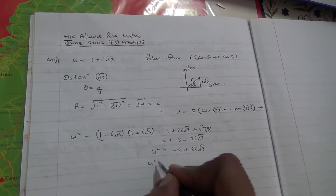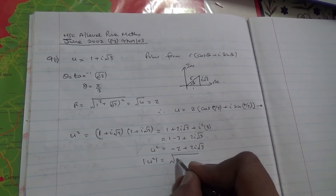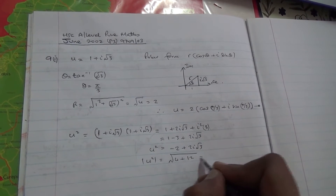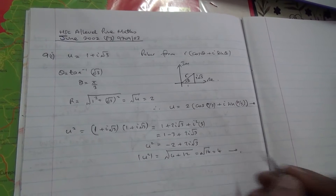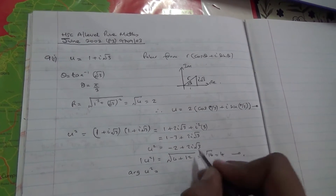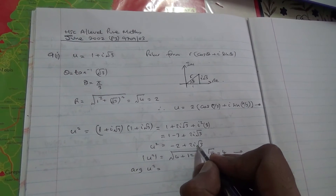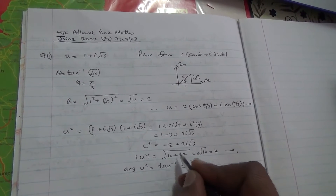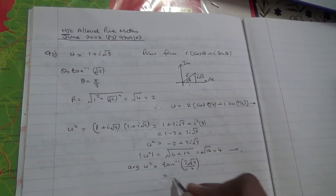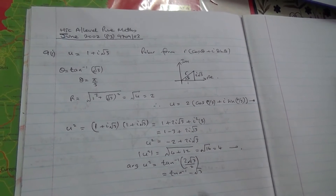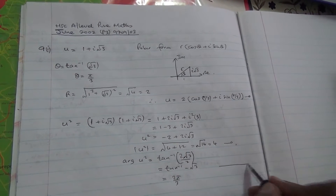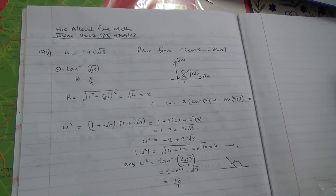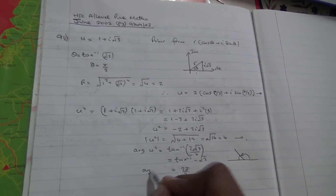The modulus of u squared is the square root of (−2)² plus (2√3)², which equals the square root of 4 plus 12, giving the square root of 16, and that is 4. The argument of u squared is tan inverse of 2√3 over minus 2, which equals tan inverse of minus √3, and that gives 2π over 3.